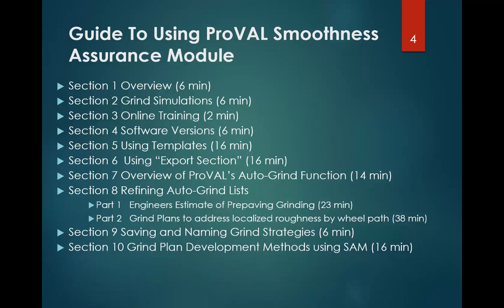Section ten is titled Grind Plan Development Methods Using the Smoothness Assurance Module and breaks the process into three methods. Method one covers developing a grind plan for localized roughness only on a single wheel path, as covered in parts one and two of section eight. Method two provides an approach for when you also have to address mean roughness index issues — addressing localized roughness will always reduce mean roughness, but sometimes not enough, so you need additional grinds. This requires keeping track of both the left and right wheel paths simultaneously, with some accounting managed via spreadsheets.